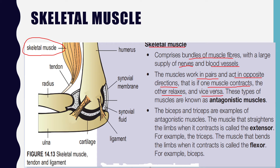This type of muscles we call antagonistic muscles. Biceps and triceps are examples of antagonistic muscles. The muscle that straightens the limb when it contracts we call the extensor — for example, the triceps. The muscle that bends the limb when it contracts we call the flexor — for example, the biceps.